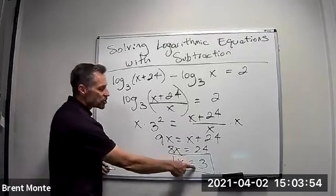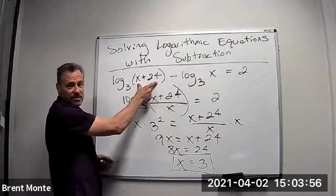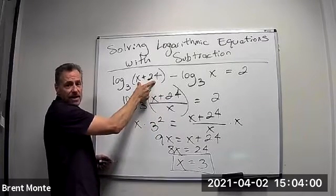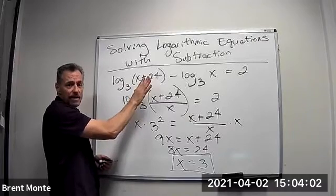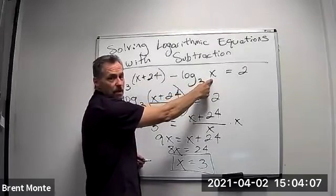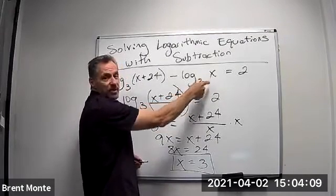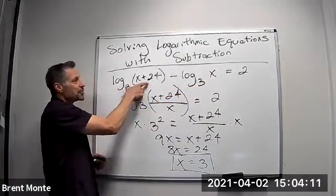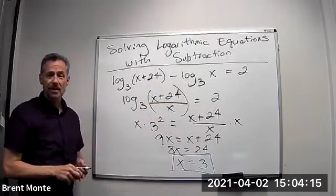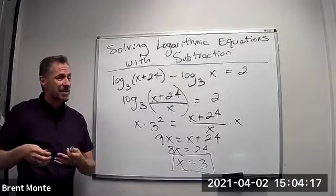We have to make sure when I plug 3 in, the argument is positive, which it is. If I plug in 3, I get log₃(27), which is 3, and log₃(3), which is 1. So this becomes 3 - 1 = 2. I've actually checked to make sure that's the right answer.